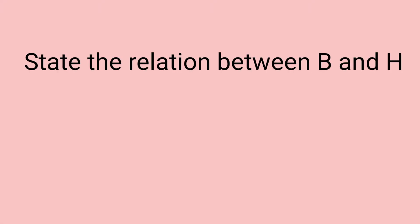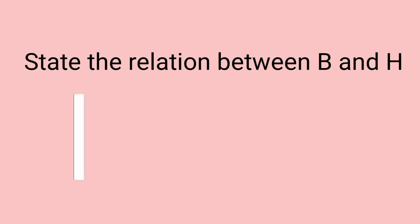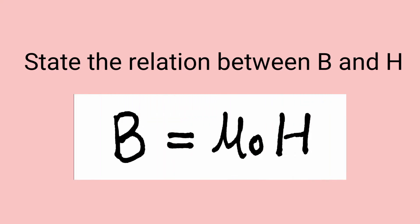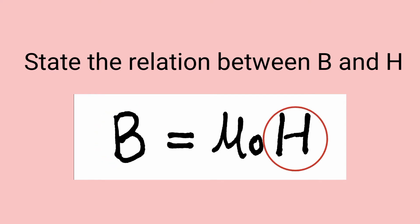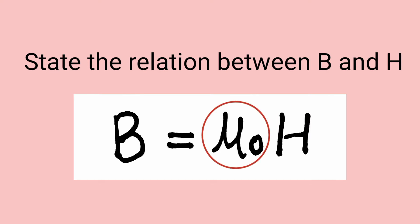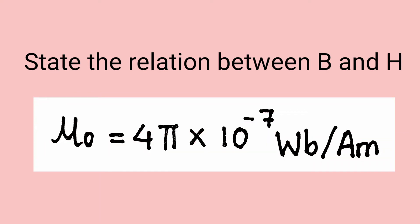Next, state the relation between B and H. The relation is given by the equation B equals mu0 times H. Here B is the magnetic flux density, H is the magnetic intensity, and mu0 is the permeability of free space having the value 4π × 10⁻⁷ Weber per ampere meter.